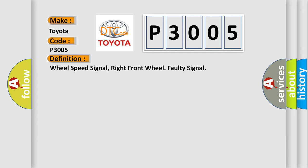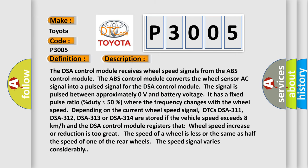Here is a short description of this DTC code. The DSA control module receives wheel speed signals from the ABS control module. The ABS control module converts the wheel sensor AC signal into a pulse signal for the DSA control module. The signal is pulsed between approximately zero volts and battery voltage, with a fixed pulse ratio of approximately 50% duty cycle, where the frequency changes with wheel speed. DTCs DSA 311, DSA 312, DSA 313, or DSA 314 are stored if the vehicle speed exceeds 8 km/h and the DSA control module registers that wheel speed increase or reduction is too great, or if the speed of a wheel is less than or equal to half the speed of one of the rear wheels.